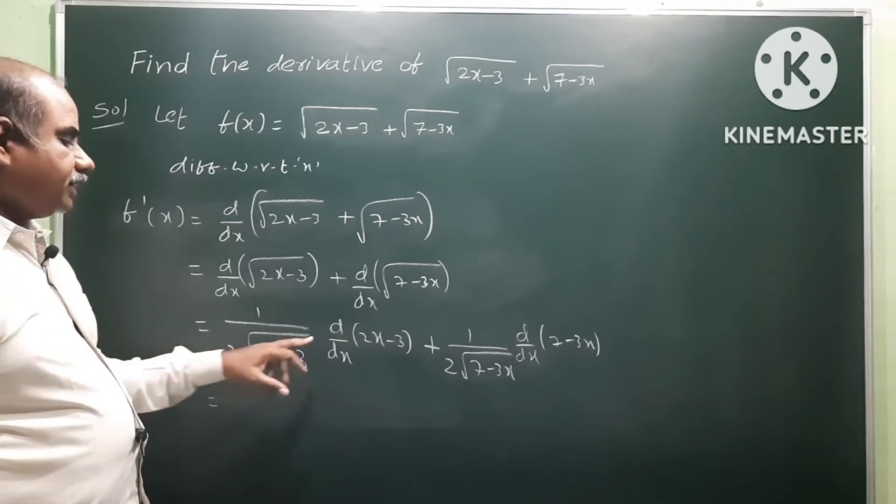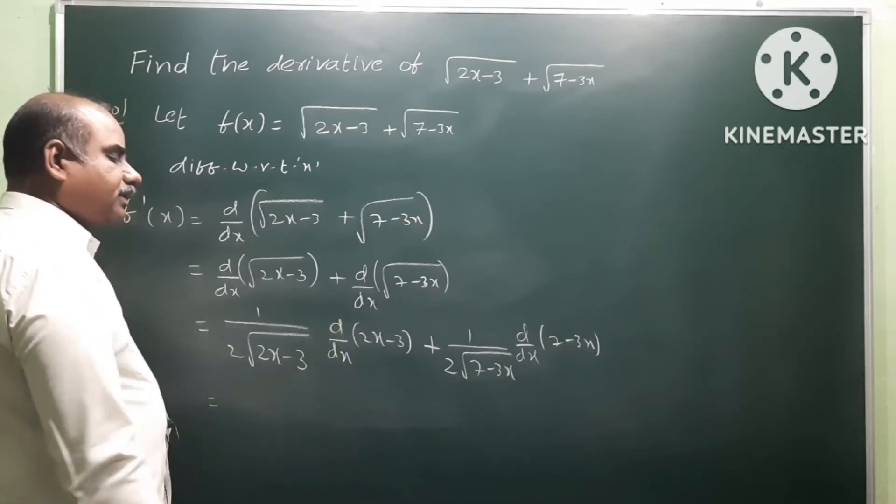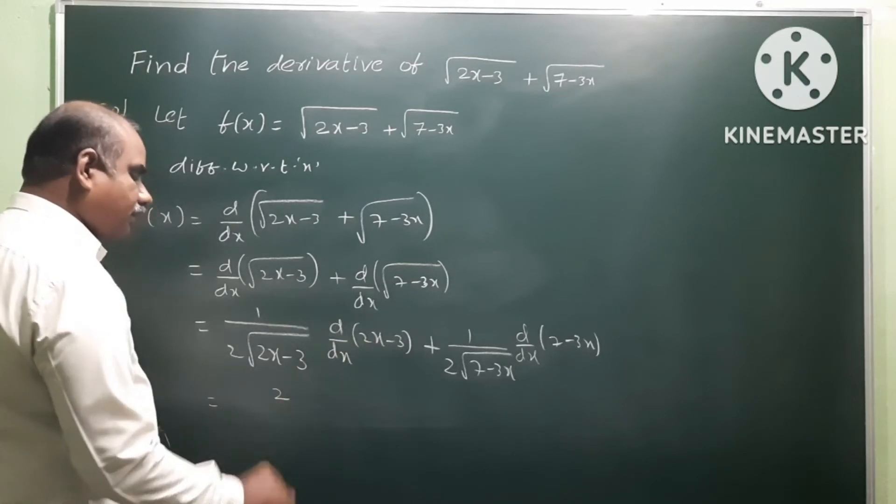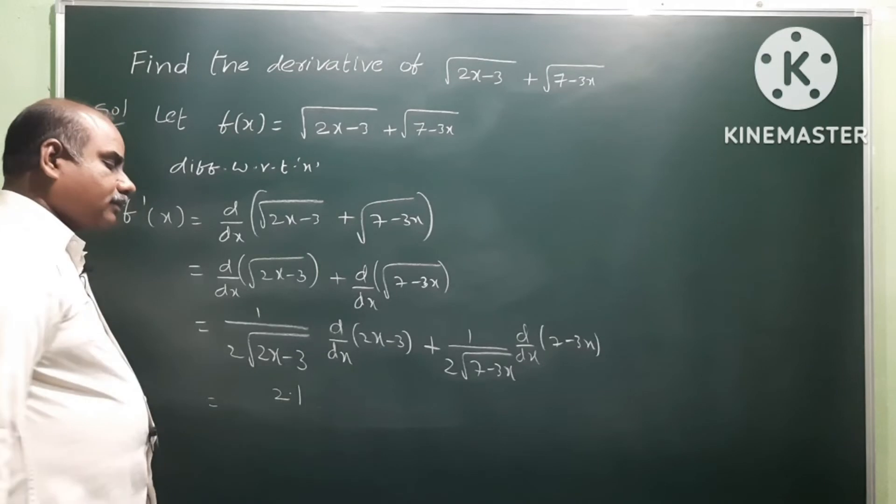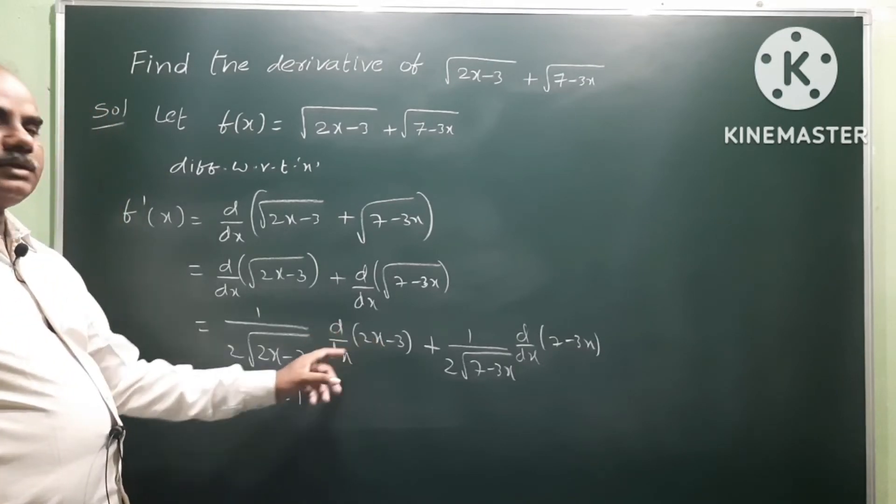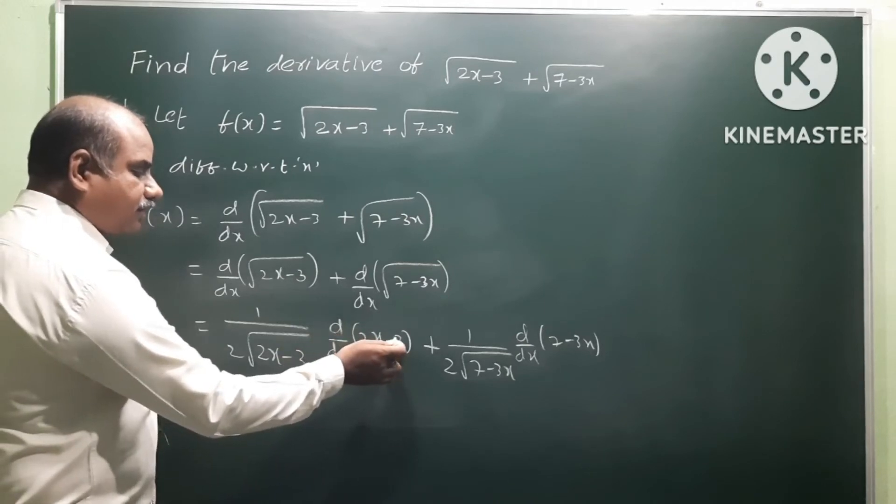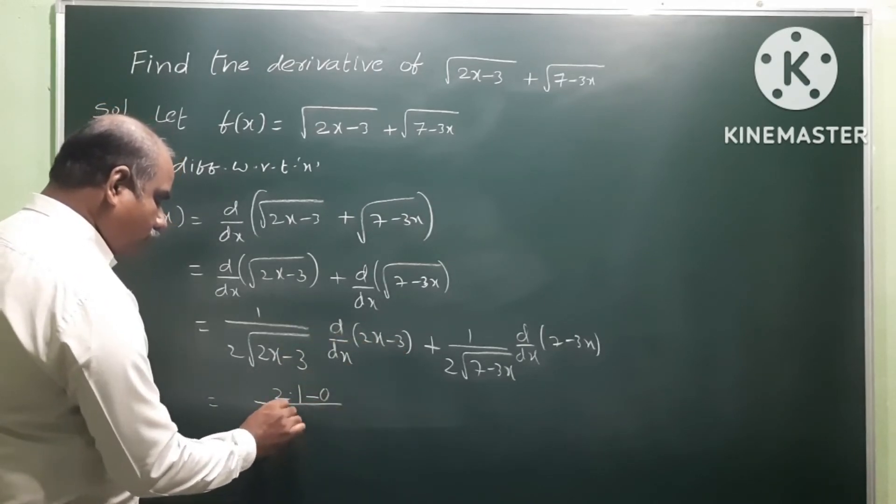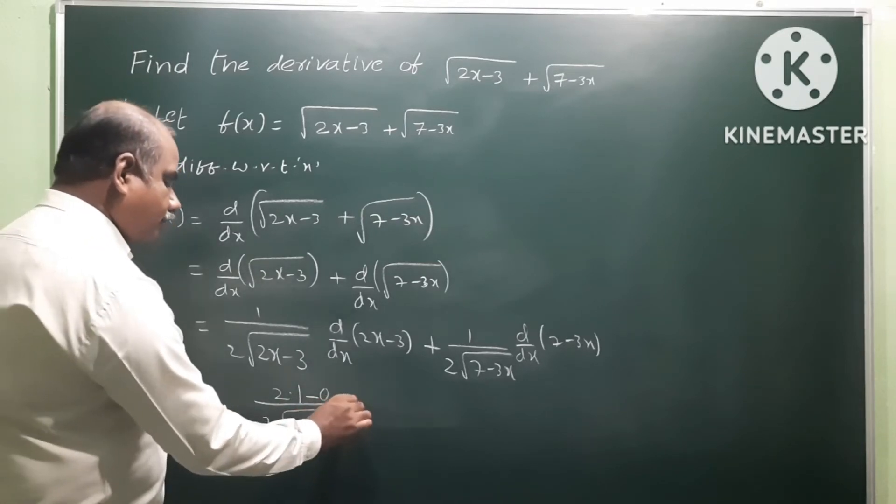So we need the derivative of 2x minus 3. We have two terms: 2x where 2 is constant, then derivative of x is 1. Minus the derivative of the constant 3, which is 0. All divided by 2 root of 2x minus 3, plus...